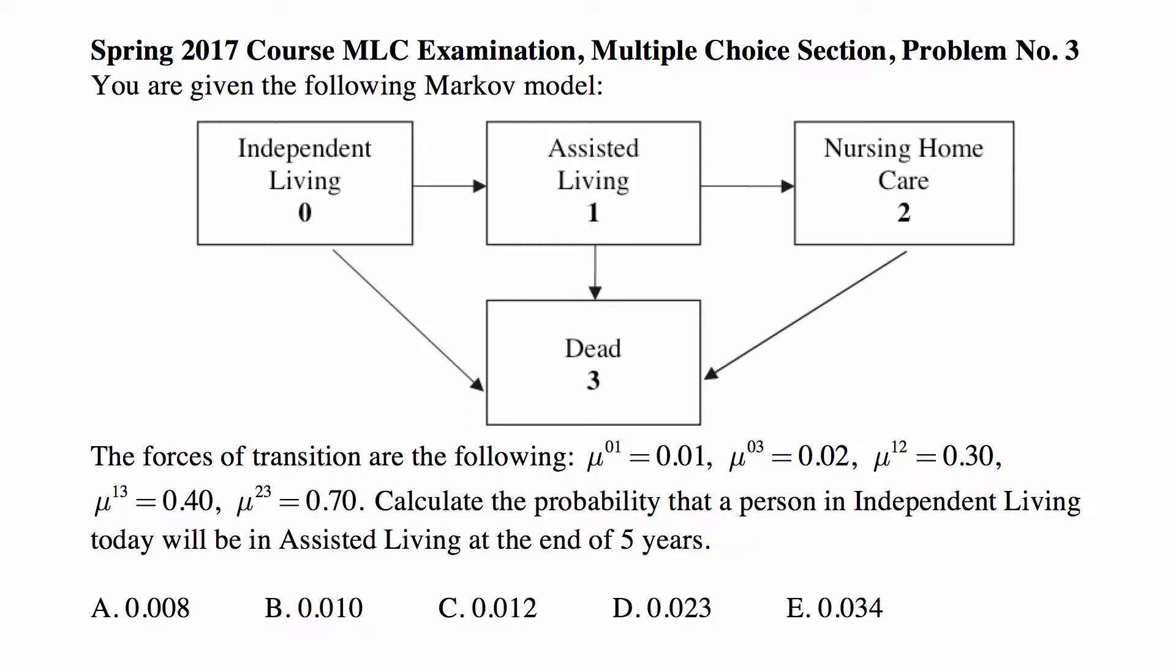Note some interesting features of this model. The arrows indicate where you can move, where there are positive probabilities of moving. So from independent living you can move to assisted living or you can die.